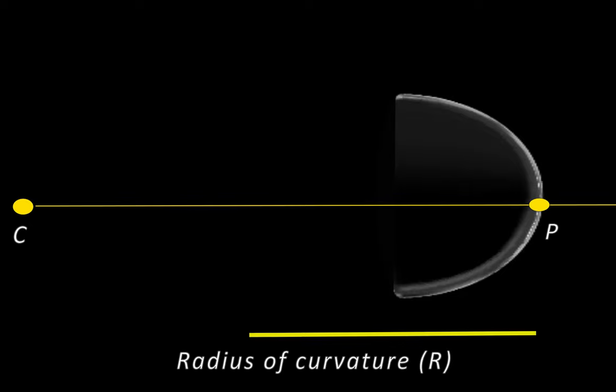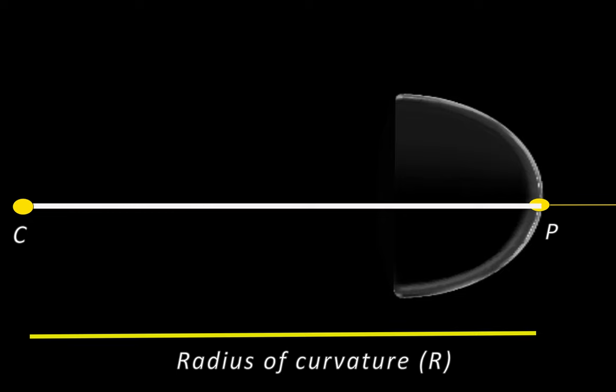The distance between the pole and the center of curvature of a spherical mirror is called the radius of curvature and is represented by letter R. Now imagine a straight line passing through the pole and the center of curvature of a spherical mirror. This line is called principal axis and is normal to the mirror at its pole.